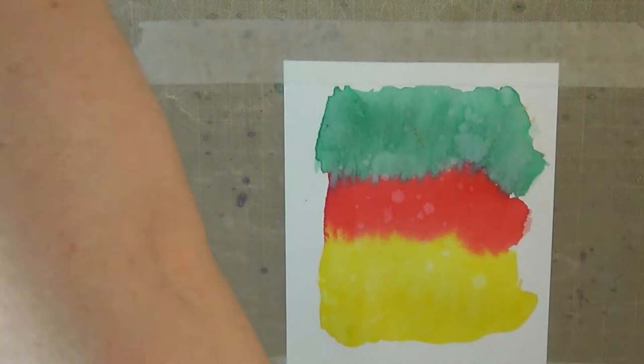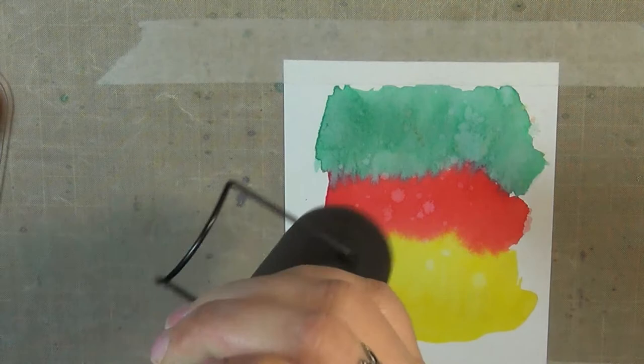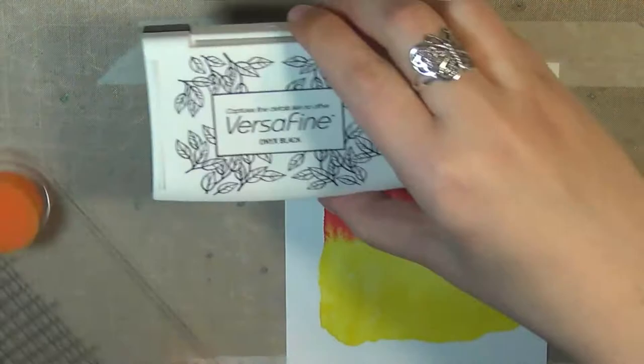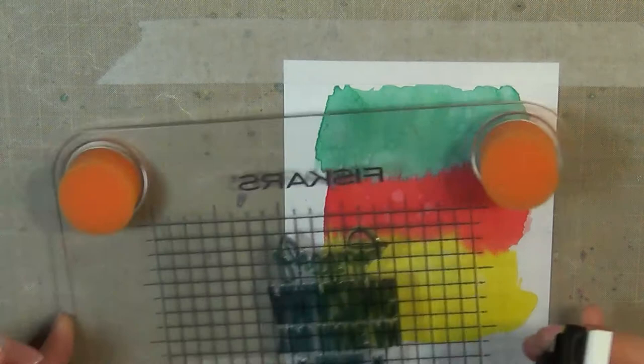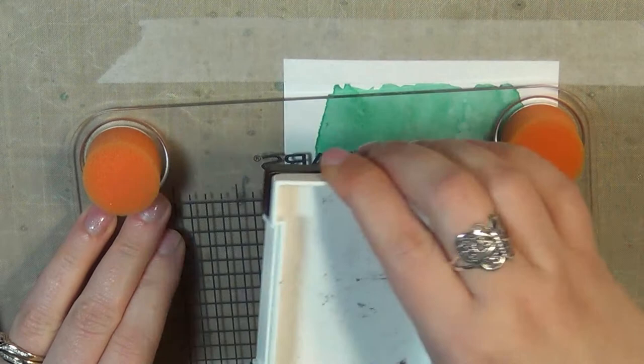I'm going to use this stamp set here today from Simon Says Stamp. This is one of my favorites from them. I really do love this big, bold sentiment. Whenever I had this idea in my head, I wanted these bright colors and then a really bold sentiment to go on top. That's why I chose this one today. You can never have too many birthday cards in my opinion.